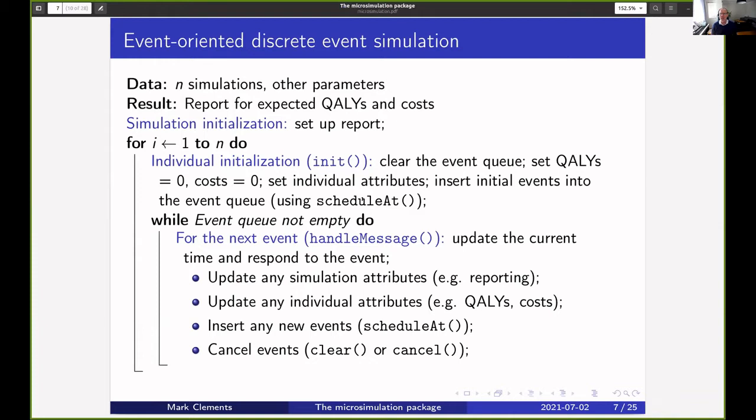Given the event queue, we basically pull out the next event and we handle that using the handleMessage method. What that does is it updates the current time and then responds to the event, possibly by updating some of the attributes or inserting new events or canceling events.